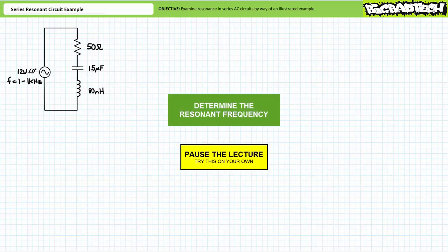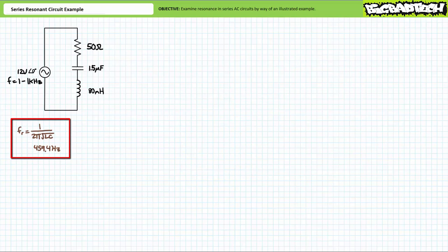By all means pause the lecture and try this on your own. If you're tracking, you should obtain the following result. The resonant frequency equals one over two pi times the square root of the inductance times the capacitance. Substituting our given values into the resonant frequency formula, we find the resonant frequency to equal approximately 459.4 hertz.